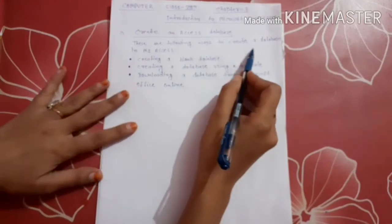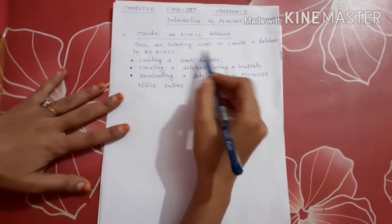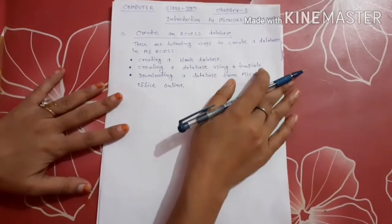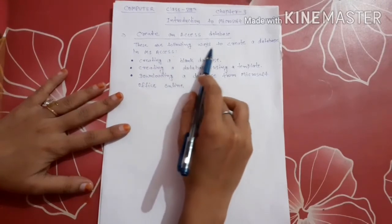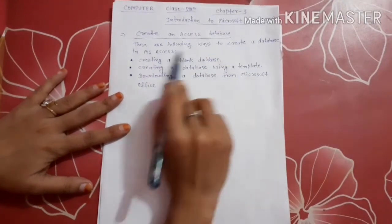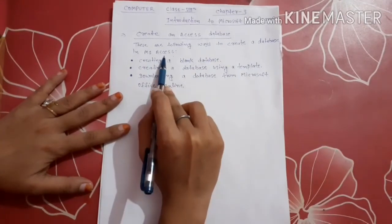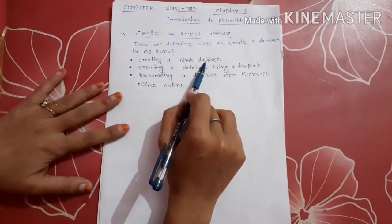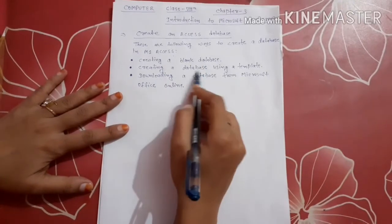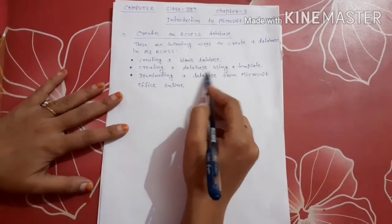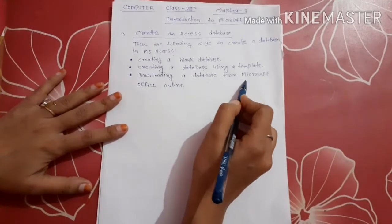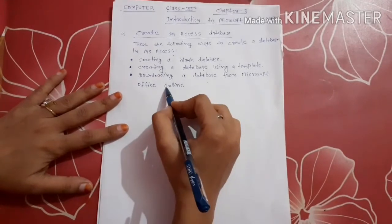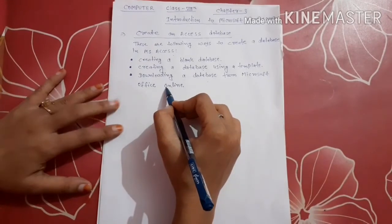There are the following ways to create a database in MS Access: creating a blank database, creating a database using a template, and downloading a database from Microsoft Office Online.